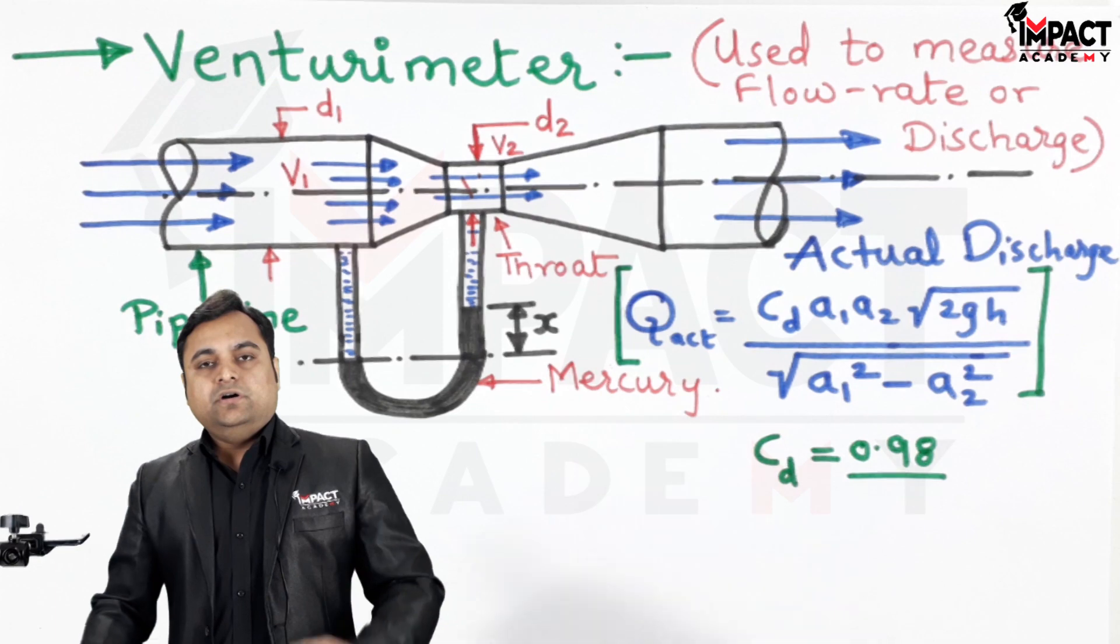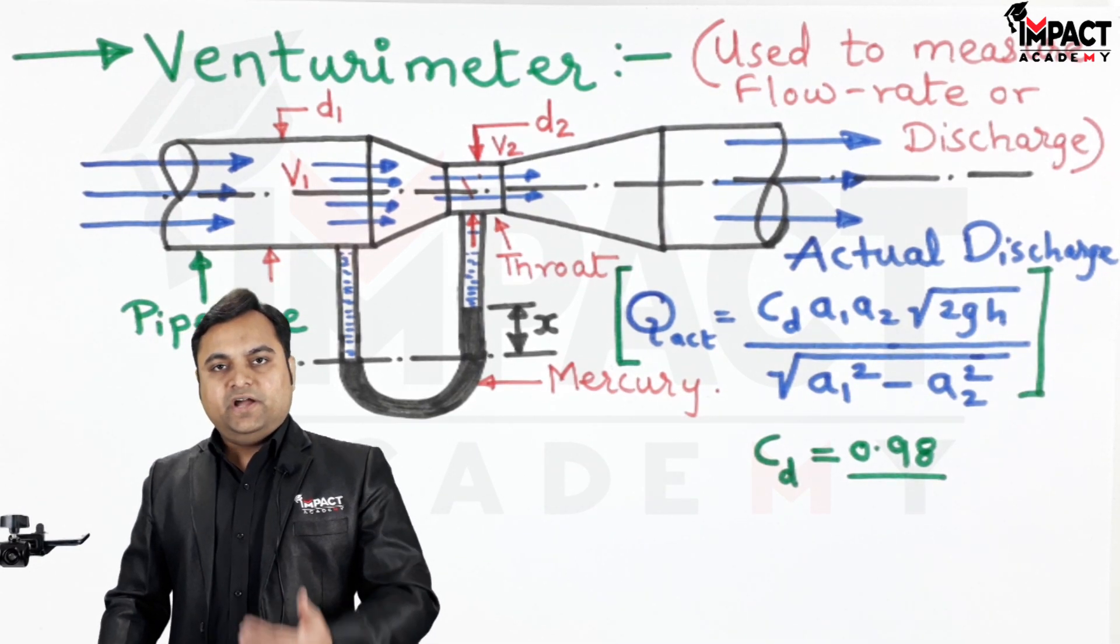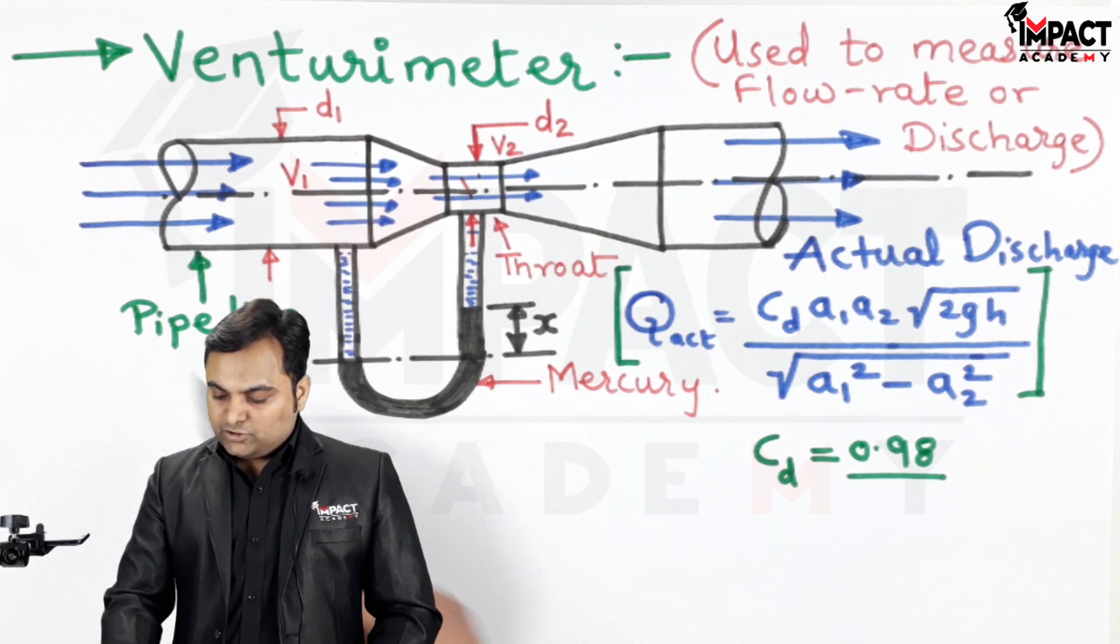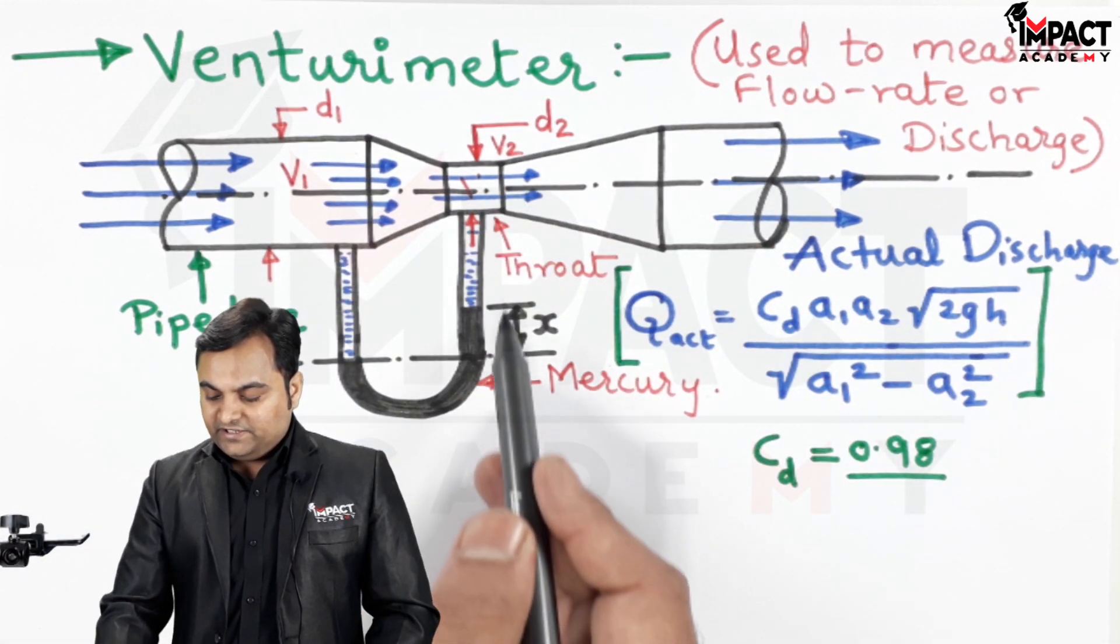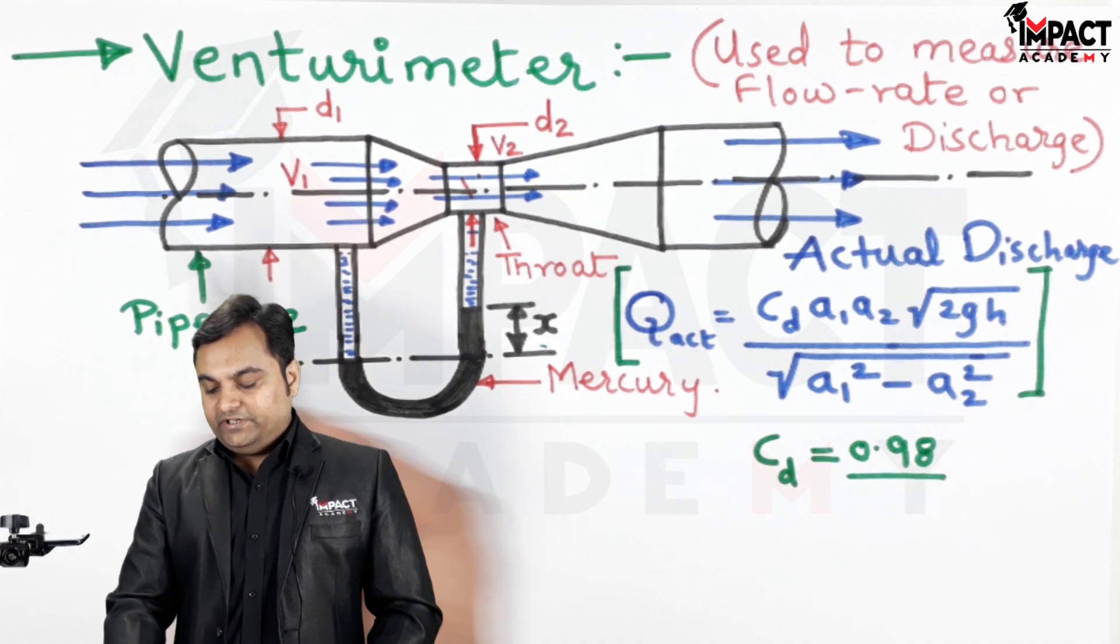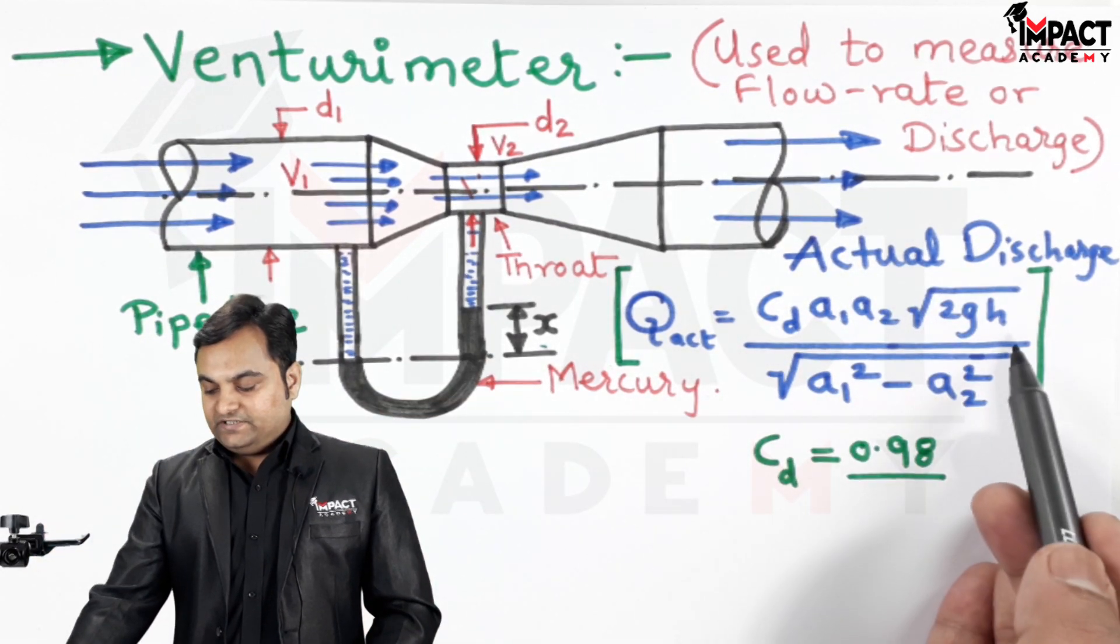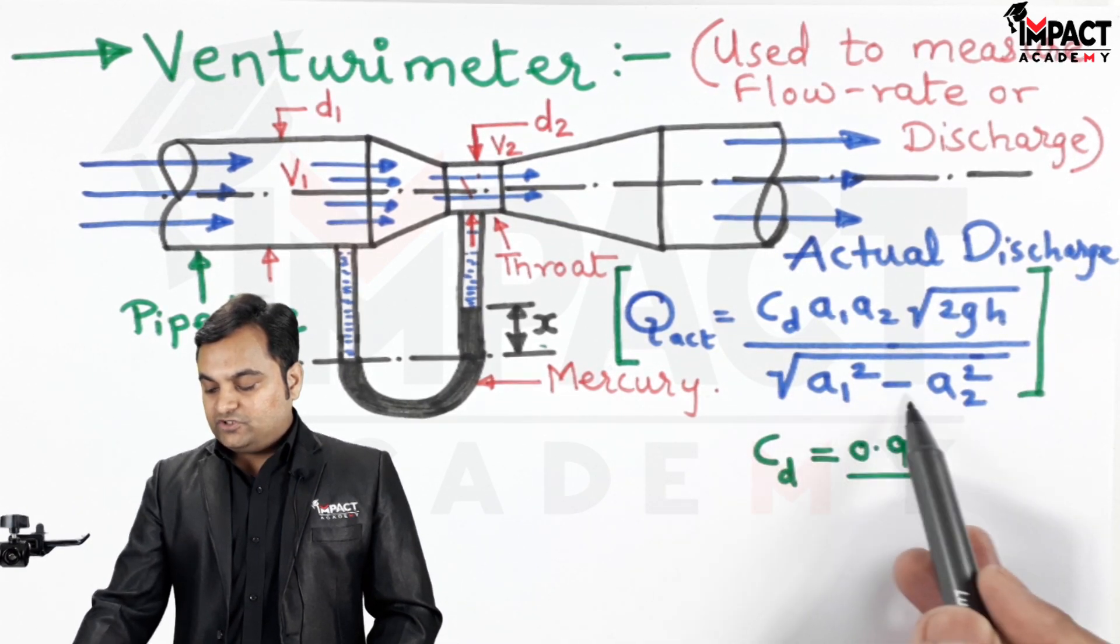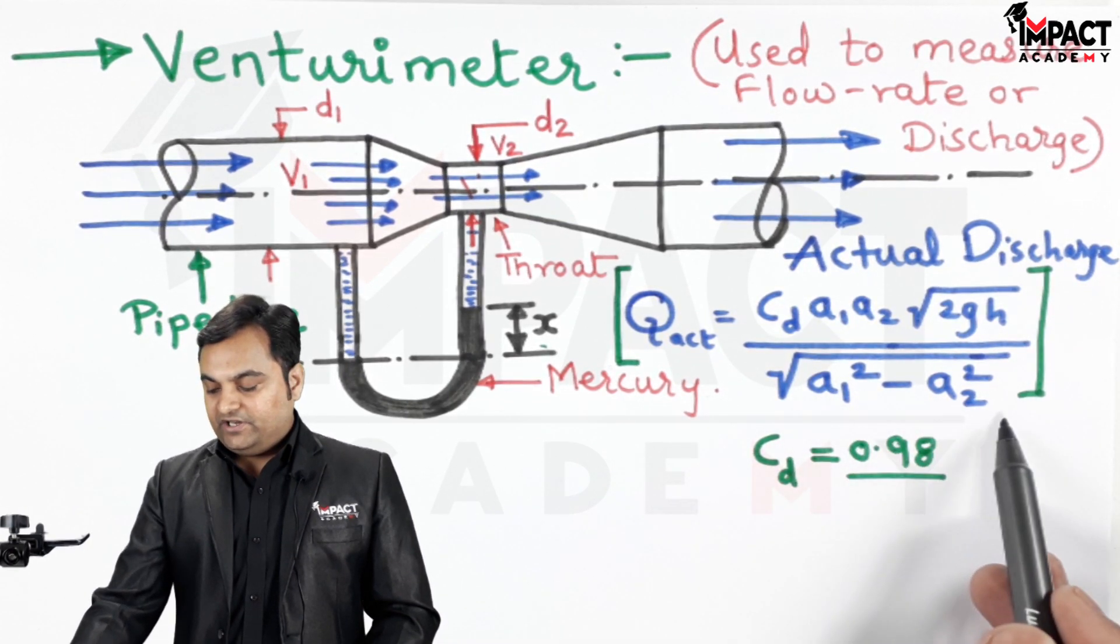H is the height or we can say the head in terms of the flowing liquid, because in case of this venturimeter we are getting the height in terms of mercury reading which is X. So that needs to be converted into the flowing liquid. That is H. And again in the denominator we have root of A1 square minus A2 square, that is area 1 and area 2.